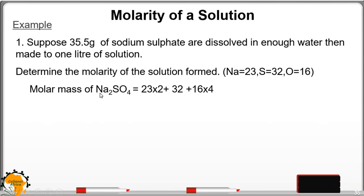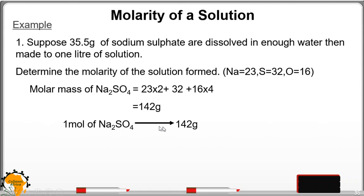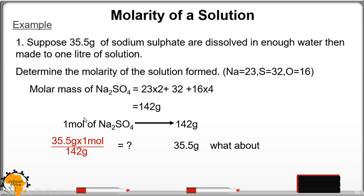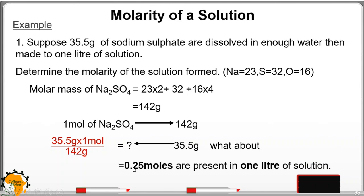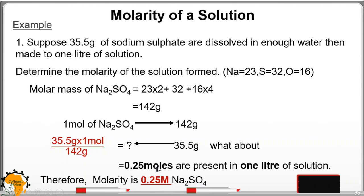The molar mass of sodium sulfate is: (23×2) + 32 + (16×4) = 142. So 1 mole of sodium sulfate has a mass of 142 grams. How many moles are present in 35.5 grams? You cross-multiply and get 0.25 moles present in 1 liter. Therefore, the Molarity is 0.25 M sodium sulfate, using the first principle for calculating Molarity.